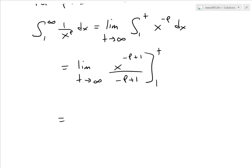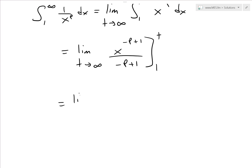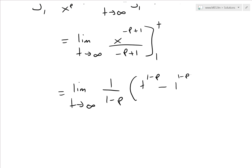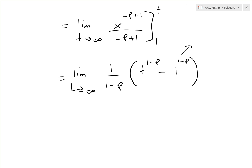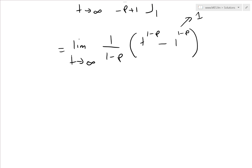I'll simplify by factoring out the constant 1 over (negative p plus 1), since it's not affected when we evaluate. We get the limit as t approaches infinity of 1 over (1 minus p), times the quantity t to the power of (1 minus p) minus 1 to the power of (1 minus p). Since 1 to any power is just 1, that last term is just 1.